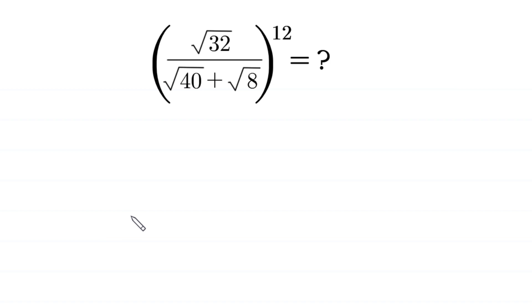Hello, welcome to how to solve this very nice square root math simplification problem: square root of 32 over square root of 40 plus square root of 8, whole to the power 12.